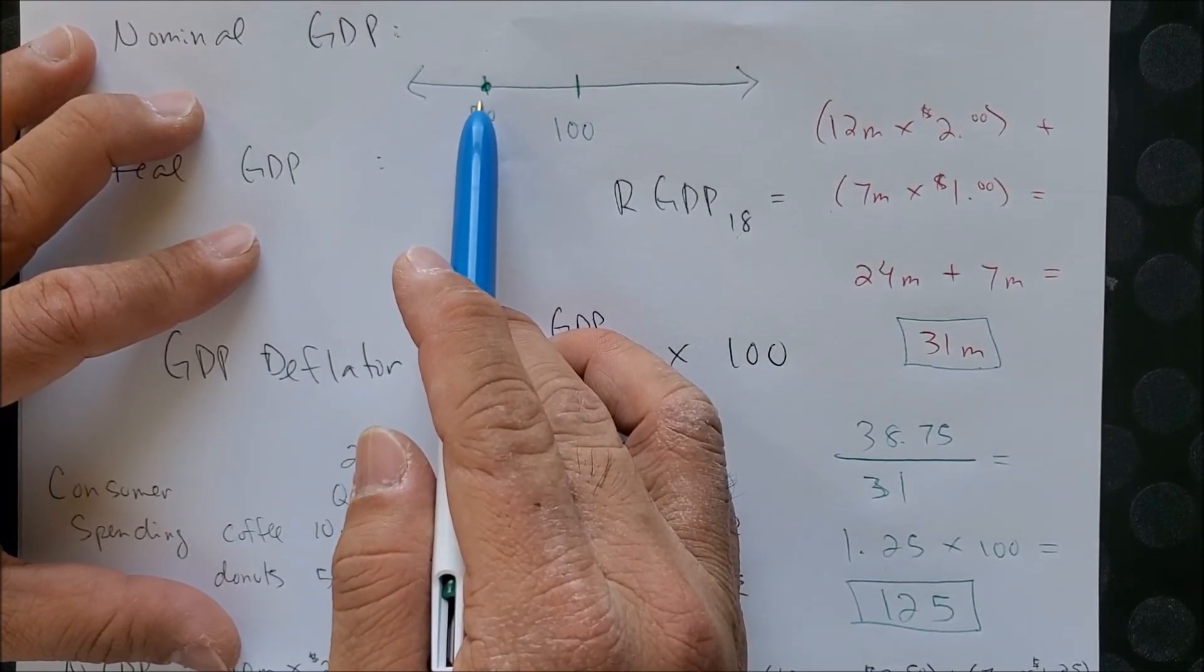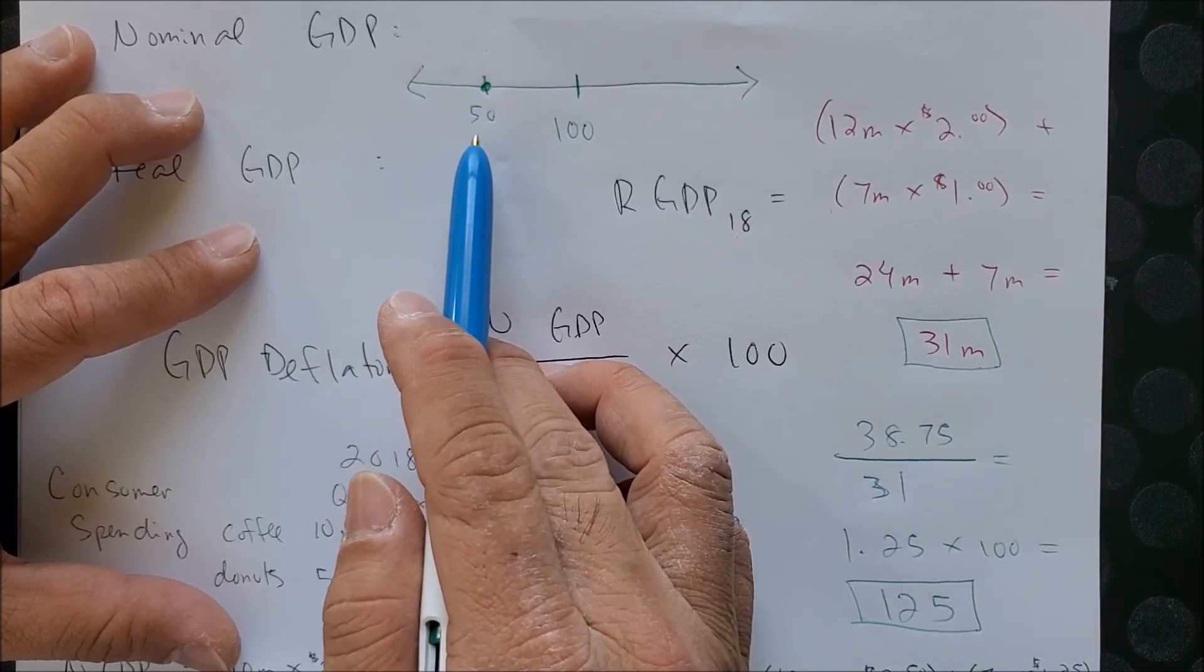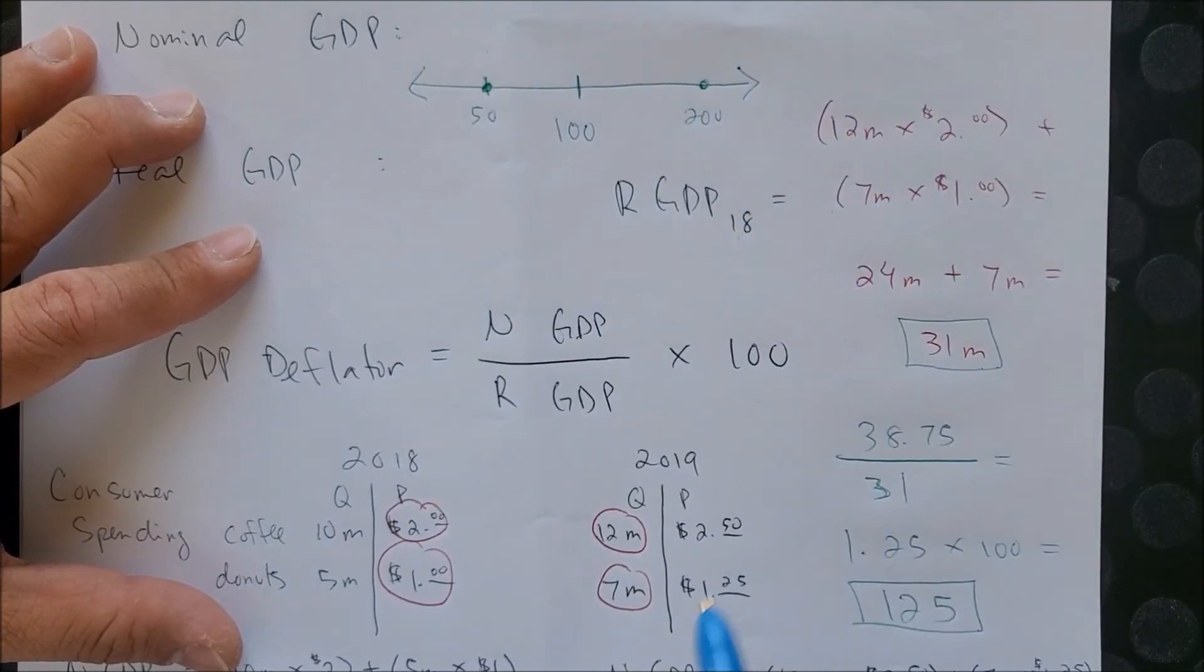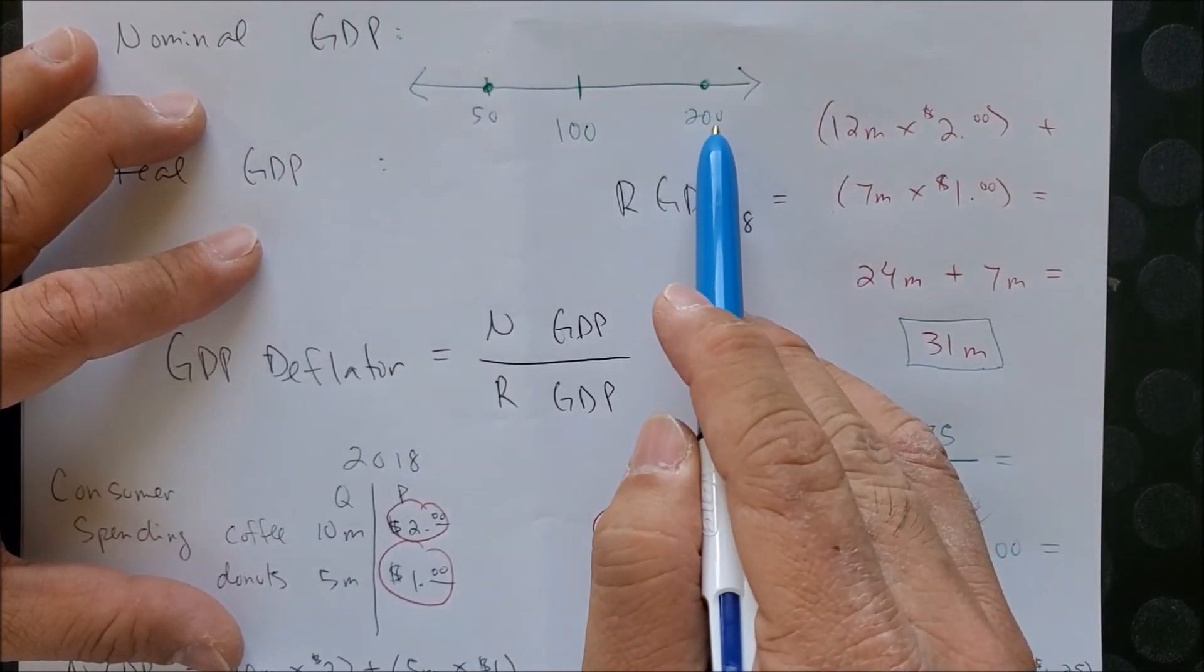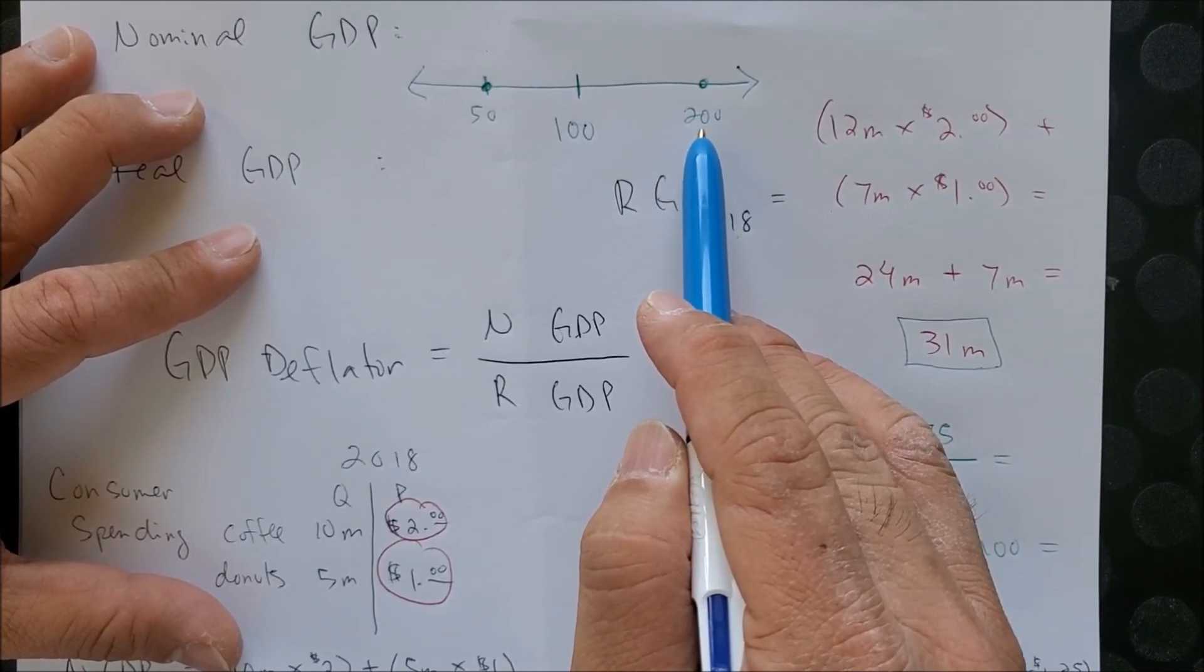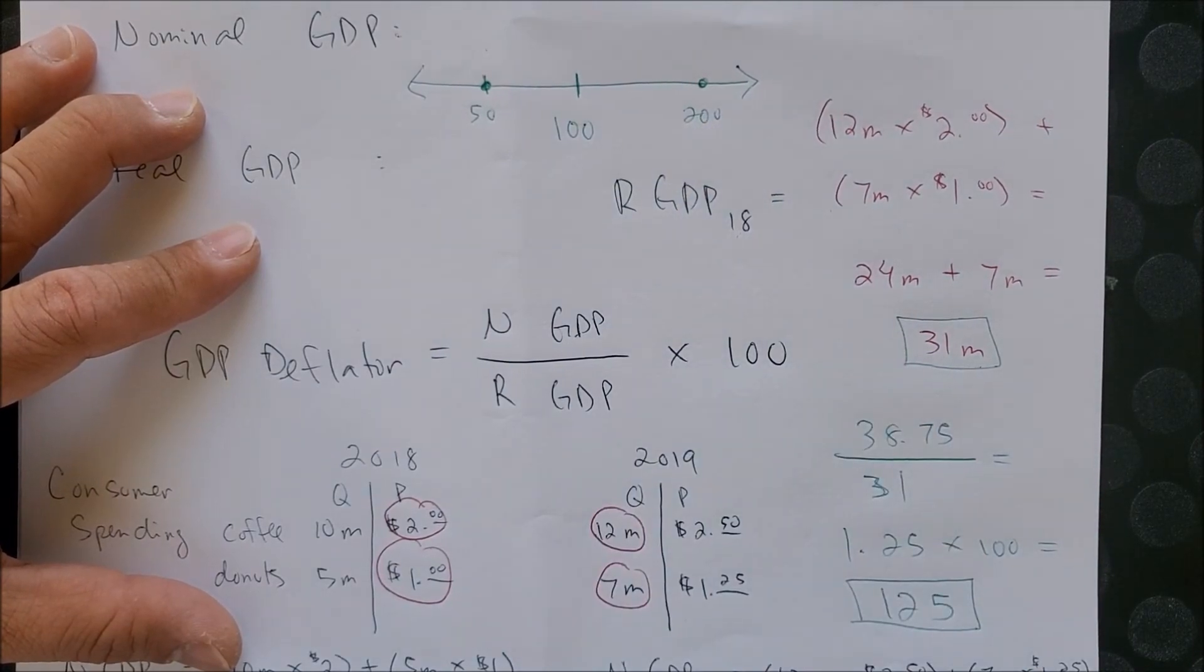If our answer instead is 200, this means that the price level growth this year is twice as much as it was last year. But since our answer is 125...